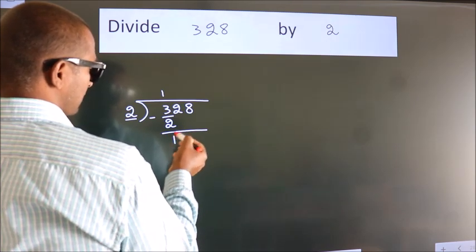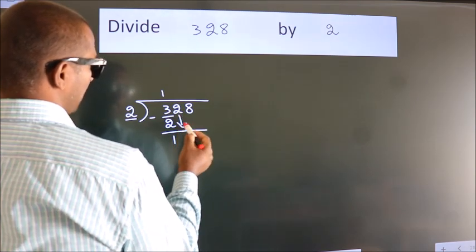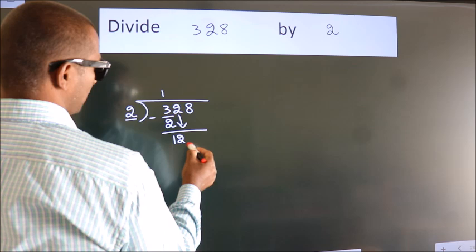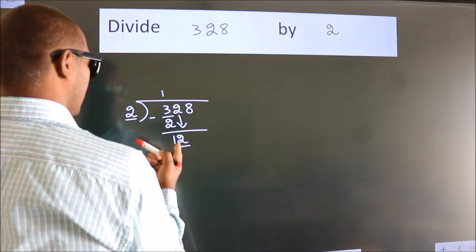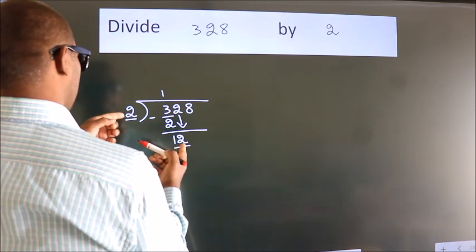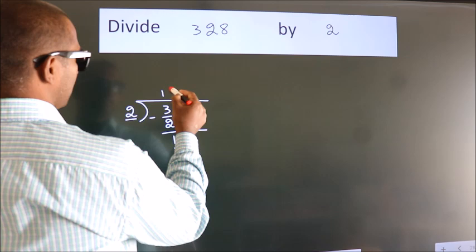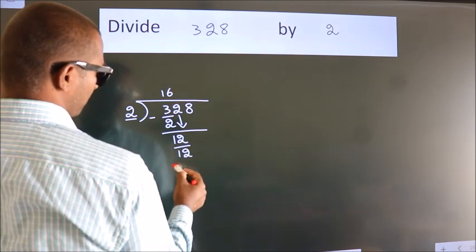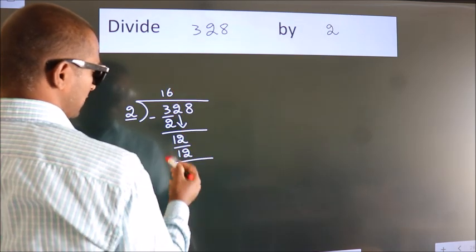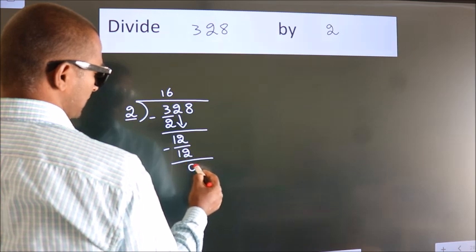After this, bring down the beside number, so 2 down. So 12. When do we get 12? In the 2 table, 2 times 6 equals 12. Now we subtract. We get 0.